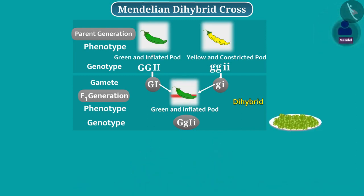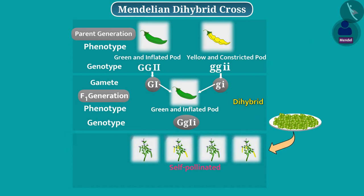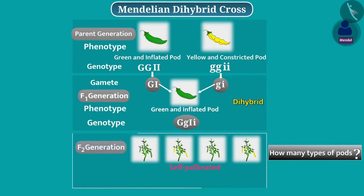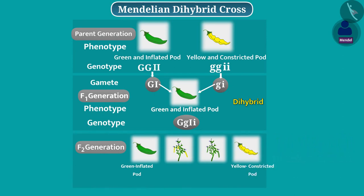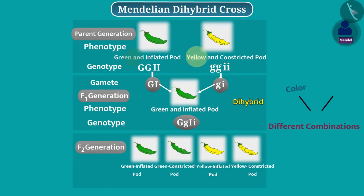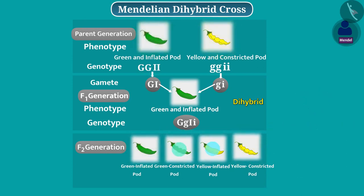Mendel grew the seeds of F1 generation plants and self-pollinated them. On the basis of monohybrid cross, we might expect that some of the pods produced in F2 generation would be green and inflated, and some pods would be yellow and constricted. But in F2 generation, four types of pods were actually produced. The F2 generation had different combinations of colour and shape, of which two combinations were the same as the parents and two combinations were new.